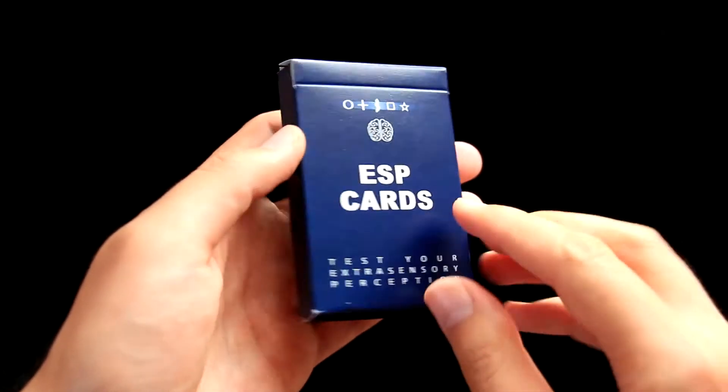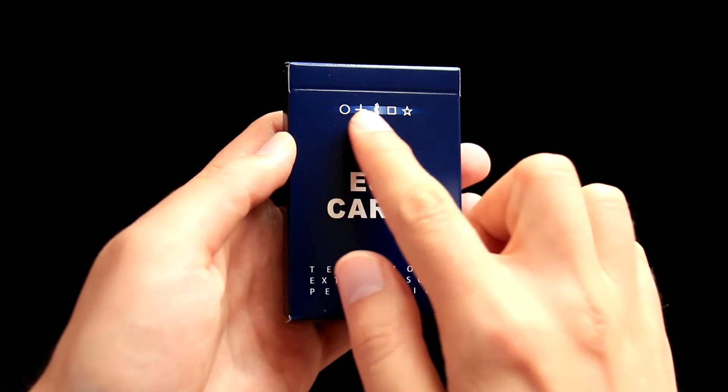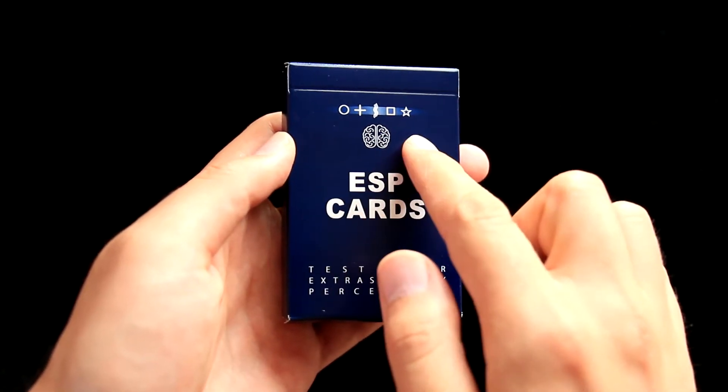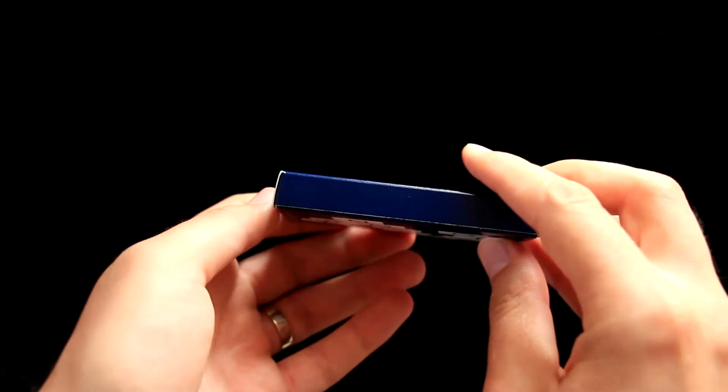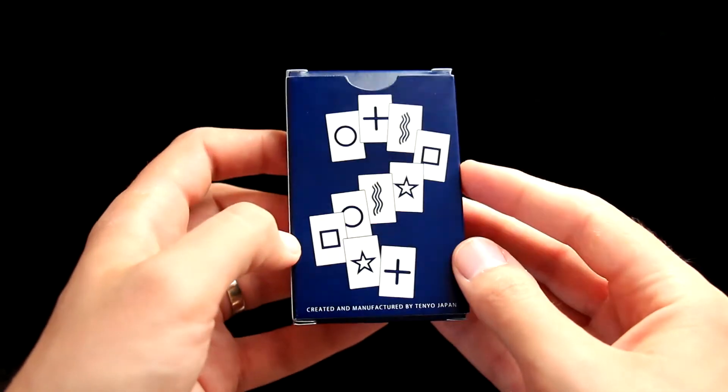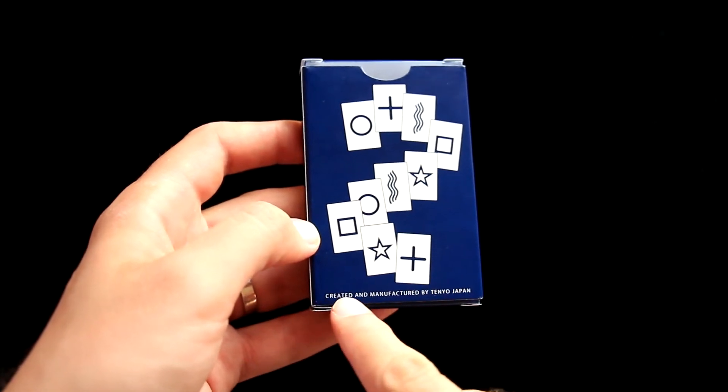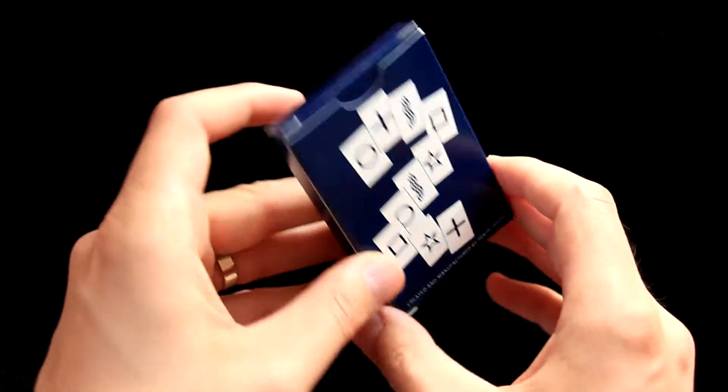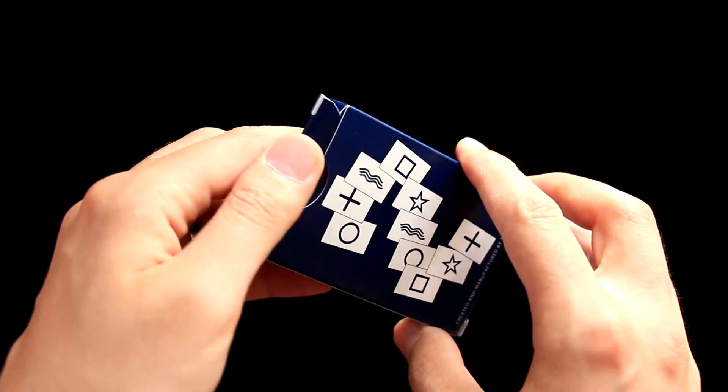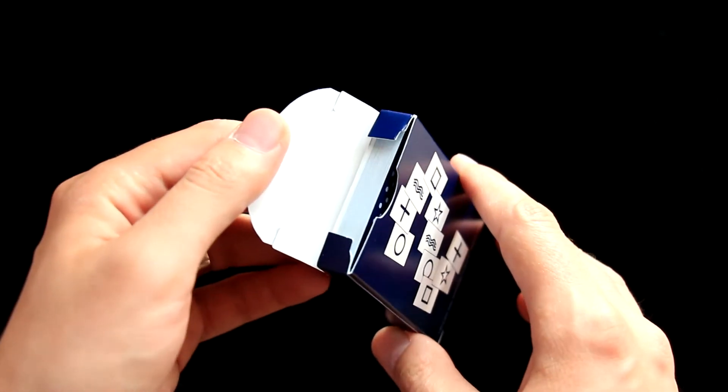The box is very simple, it says ESP cards on the front. Here we have all ESP symbols together with picture of a brain and it says test your extrasensory perception, nothing on sides. And from the back we have all ESP symbols again and here it says created and manufactured by Tenyo Japan. That's pretty much it for the tuck case. Let's open it and look at cards inside.